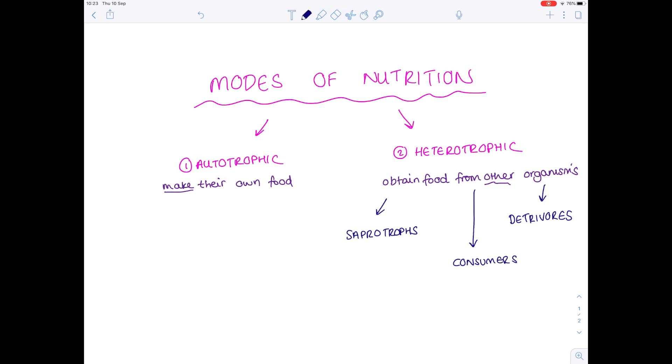The beginning part of this video is just getting you used to the fact that there are two main types of nutrition: autotrophic, which is all to do with organisms making their own food, and heterotrophs, which have to consume other organisms. They are further subcategorized into saprotrophs, consumers, and detrivores. The rest of this video will be spent looking at these terms in greater detail.